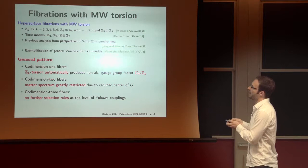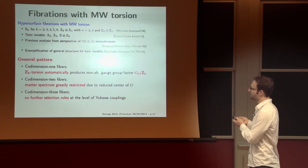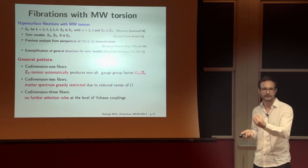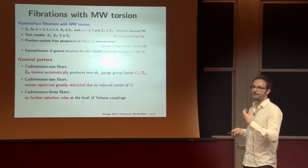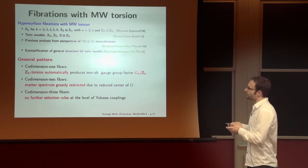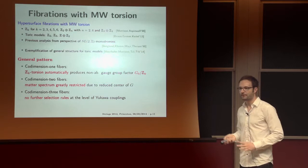Namely, the pattern is, if we have torsional Mordell-Weil group, then the following things change. In co-dimension one, Z_k torsion automatically forces upon us a non-trivial non-abelian gauge group of type g_0 over Z_k, something in which we can embed a Z_k center. So this always gives rise to non-abelian gauge group. In co-dimension two, the matter spectrum is greatly reduced because we have g_0 over Z_k. So this is a way to avoid matter if we want to avoid it. And surprisingly, in co-dimension three, nothing happens. So there have been speculations that this might lead to further selection rules on the Yukawas. I also believed this when looking at this to my greatest disappointment it's not happening. So these are the facts. Nothing changes in co-dimension three.